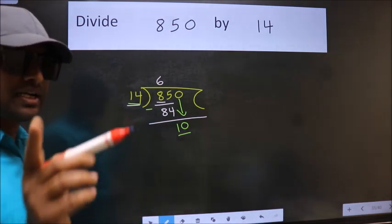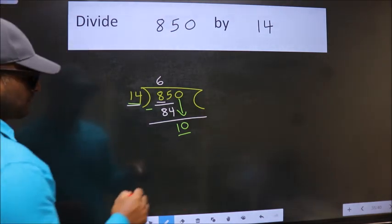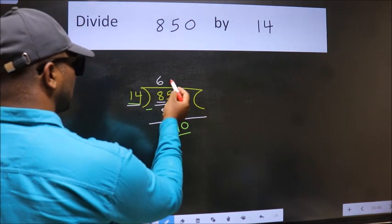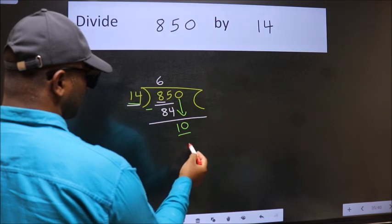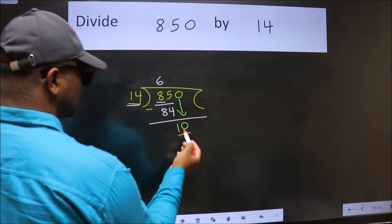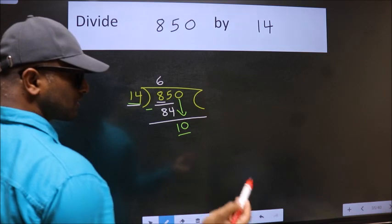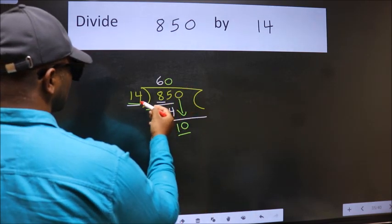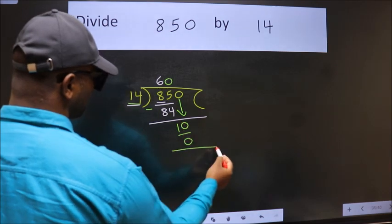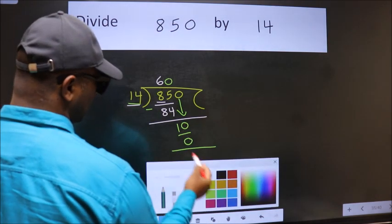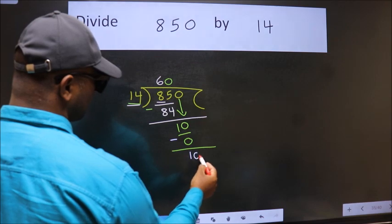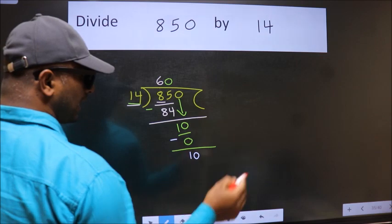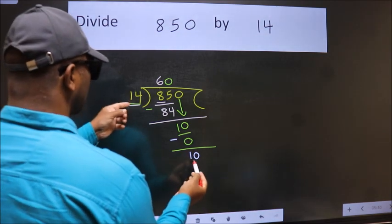Instead of that, what we should think of doing is which number should we take here? If I take 1, we will get 14. But 14 is larger than 10. So what we do is we take 0 here. So 14 into 0, 0. Now we subtract. We get 10. Over here, we did not bring any number down. And 10 is smaller than 14.